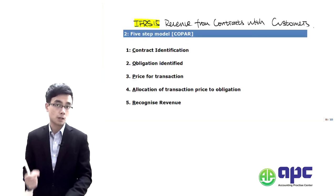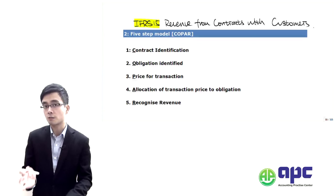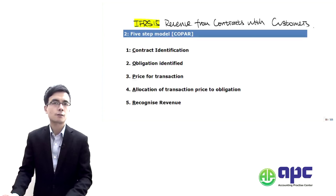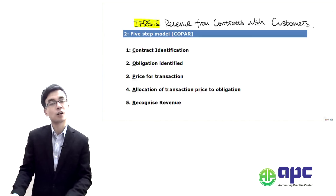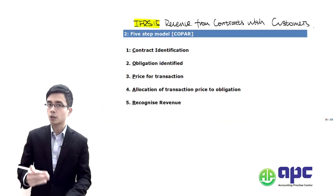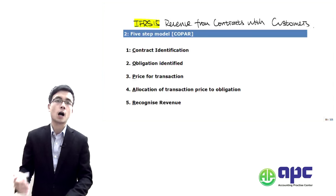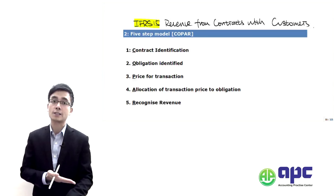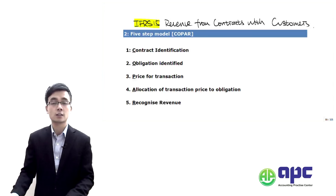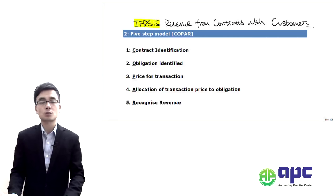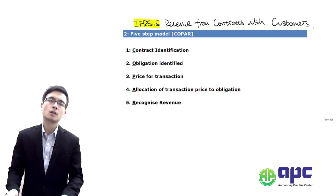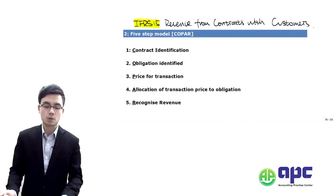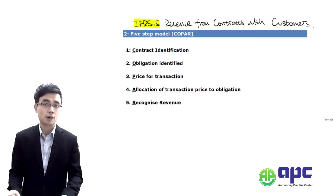In this particular latest accounting standard, we're going to divide the section into two. The first part will give you an overall example related to IFAS number 15 of how we're going to recognise the revenue — either using IFAS number 18, the old accounting standard, or the latest accounting standard, IFAS number 15. The second part of this video will detail the five-step model given by IFAS number 15.